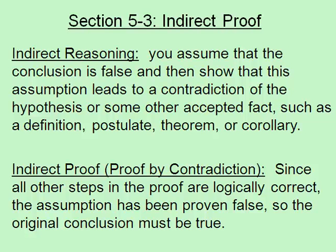Hello everybody and welcome to section 5.3. This is about indirect proof and indirect reasoning. Let's first define that. Indirect reasoning is when you assume that the conclusion is false and then show that this assumption leads to a contradiction of the hypothesis or some other accepted fact, such as a definition, postulate, theorem, or corollary.